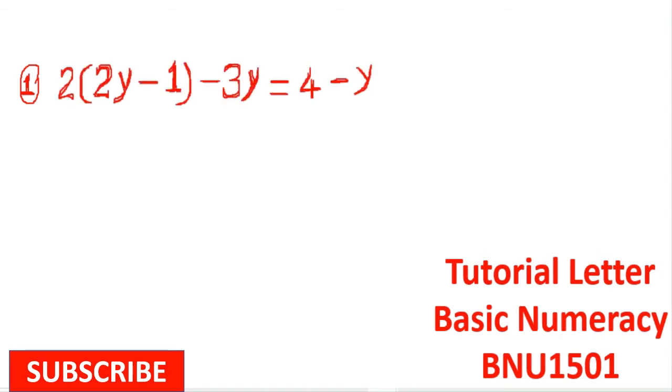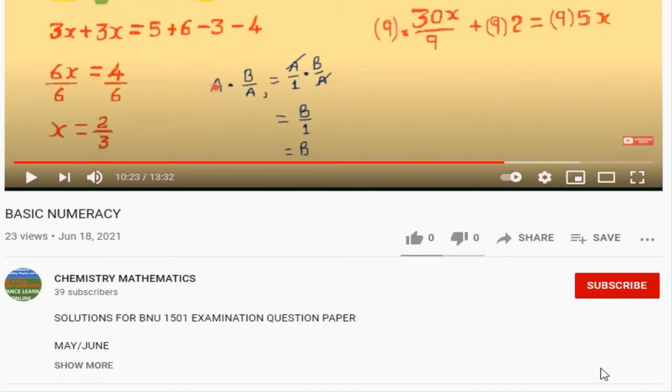In this video, we are going to solve for y given 2(2y - 1) - 3y = 4 - y. If you are new to this channel, please press the subscribe button and notification bell.